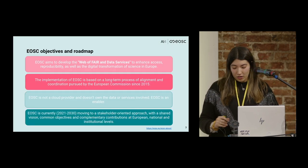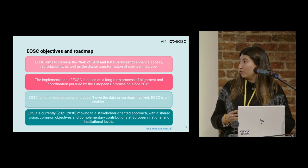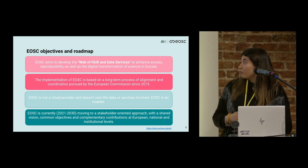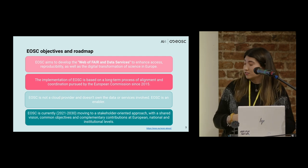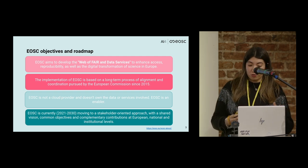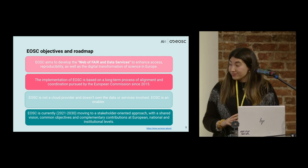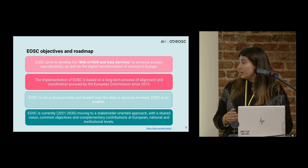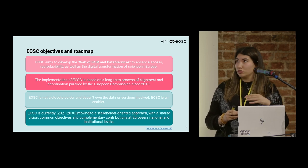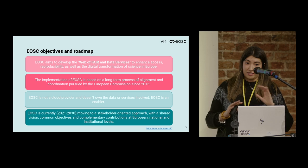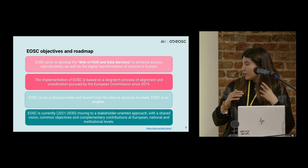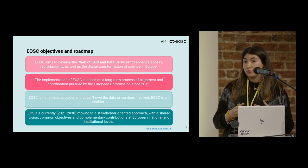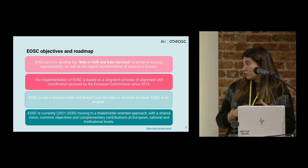Let's start by the objectives and the roadmap of the European Open Science Cloud — the EOSC — which aims to develop the web of FAIR data services in order to enhance science, reproducibility, and the data transformation we want to perform in Europe. The implementation is a long-term process coordinated by the European Commission since 2015. Currently, in the phase between 2021 and 2030, we are moving to a stakeholder approach with a common vision, common objectives, and complementary contributions at the European, national, and institutional level.